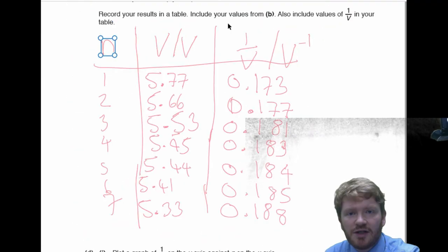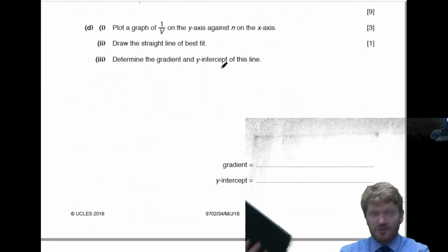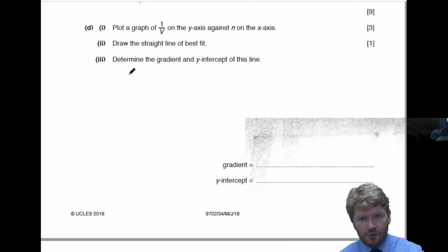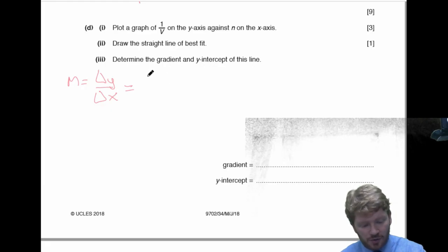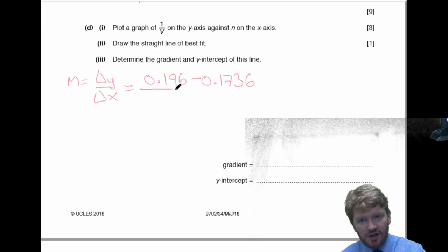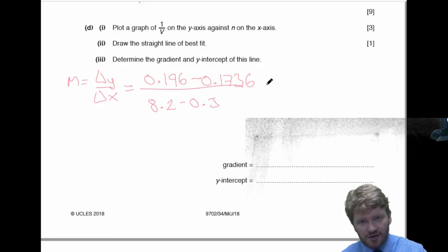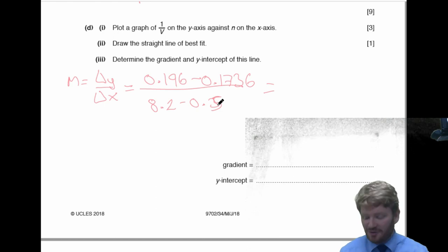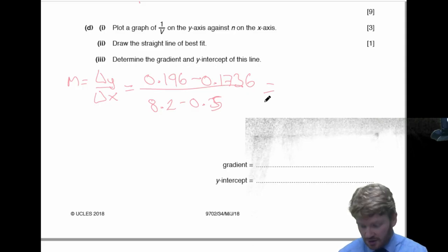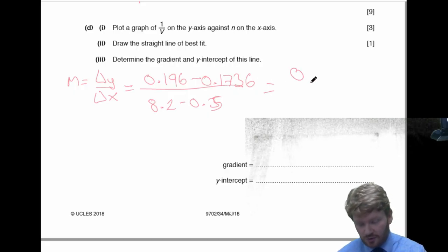So now I'm asked to determine the gradient and the y-intercept. So, I have already worked out a couple of points. I just need to use them. So, remember that your gradient, which I'm going to call M, is equal to your change in your y-axis divided by your change in your x-axis. So, in my case, my change in my y-axis was, it went from 0.196, take away 0.1736. And I'm going to divide that by my change in x, which will be 8.2, take away 0.5. Again, I'm doing a lot of do as I say, not as I do here. When you're writing with a pencil, this obviously will be a lot neater than I am doing it.